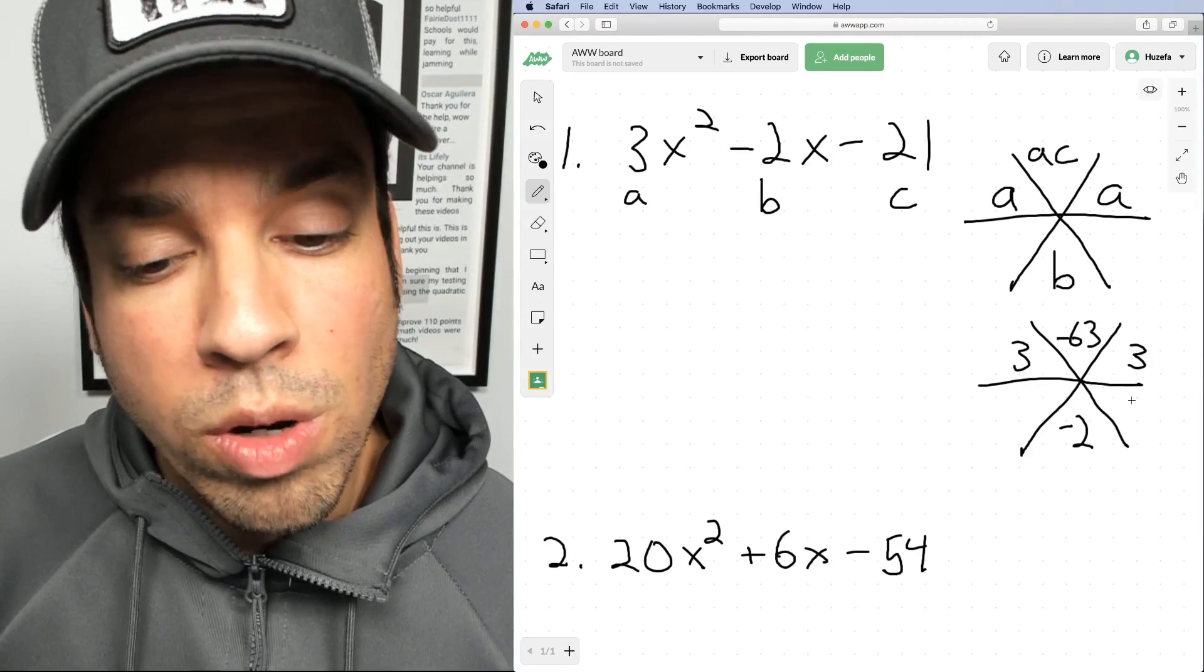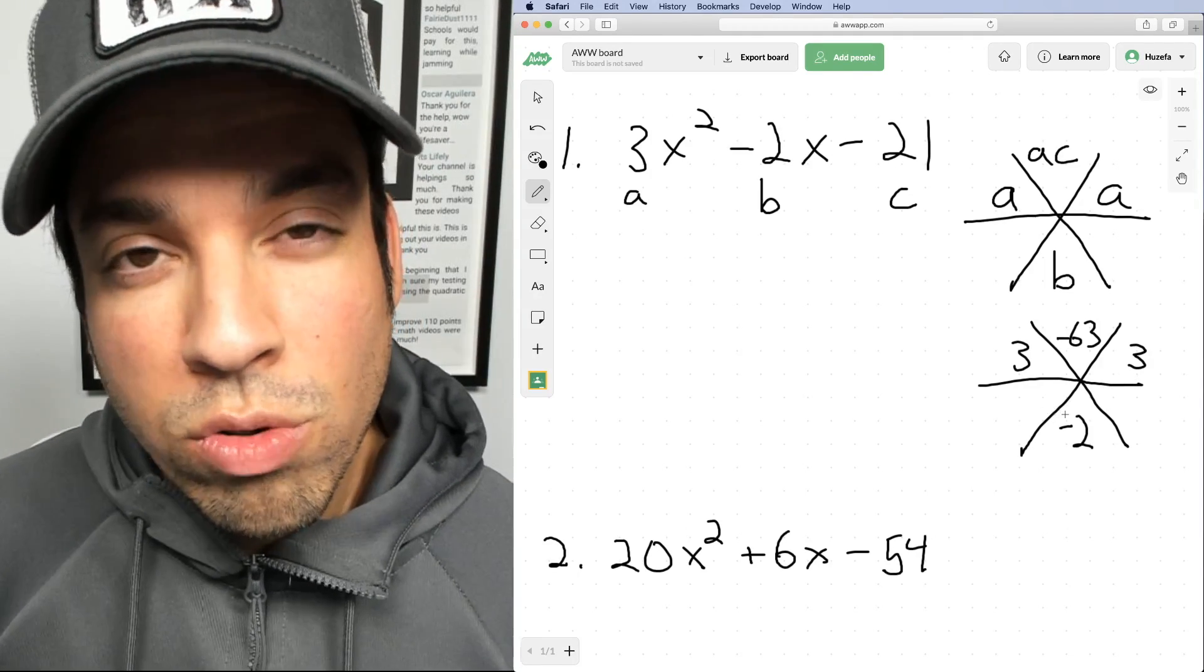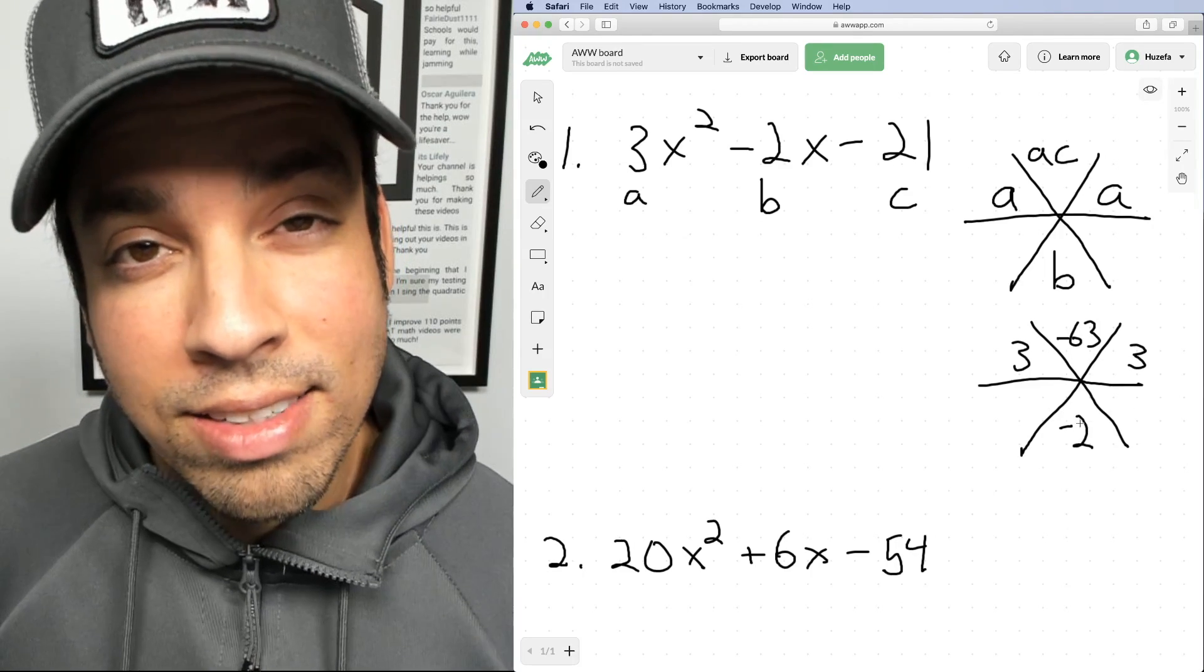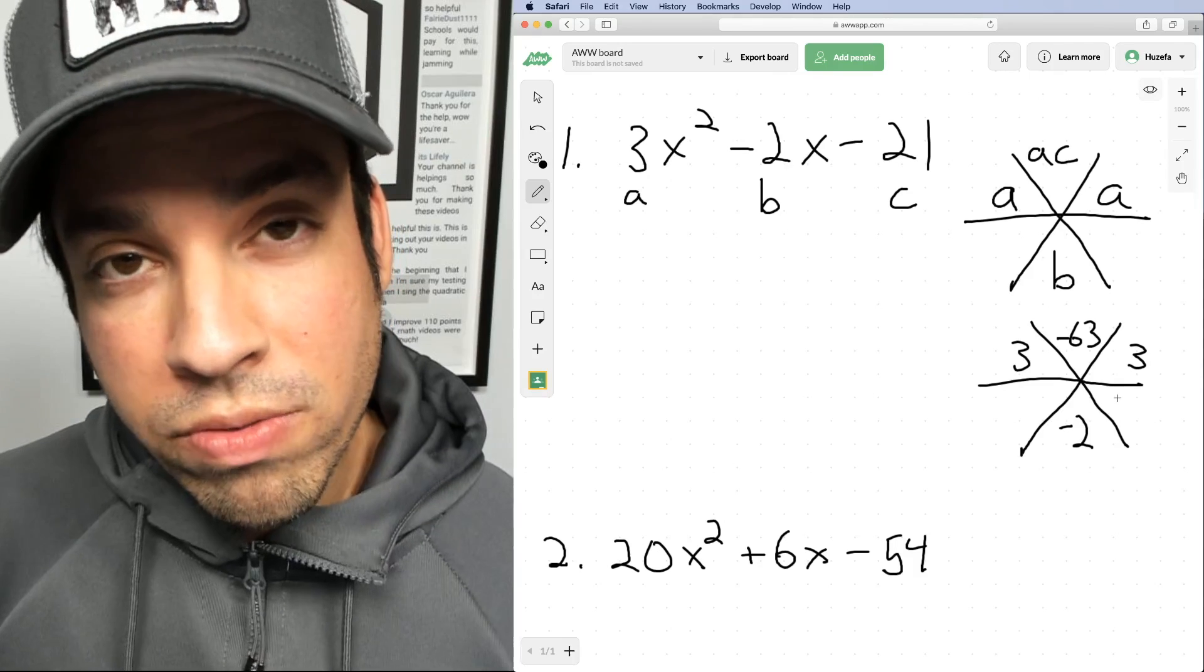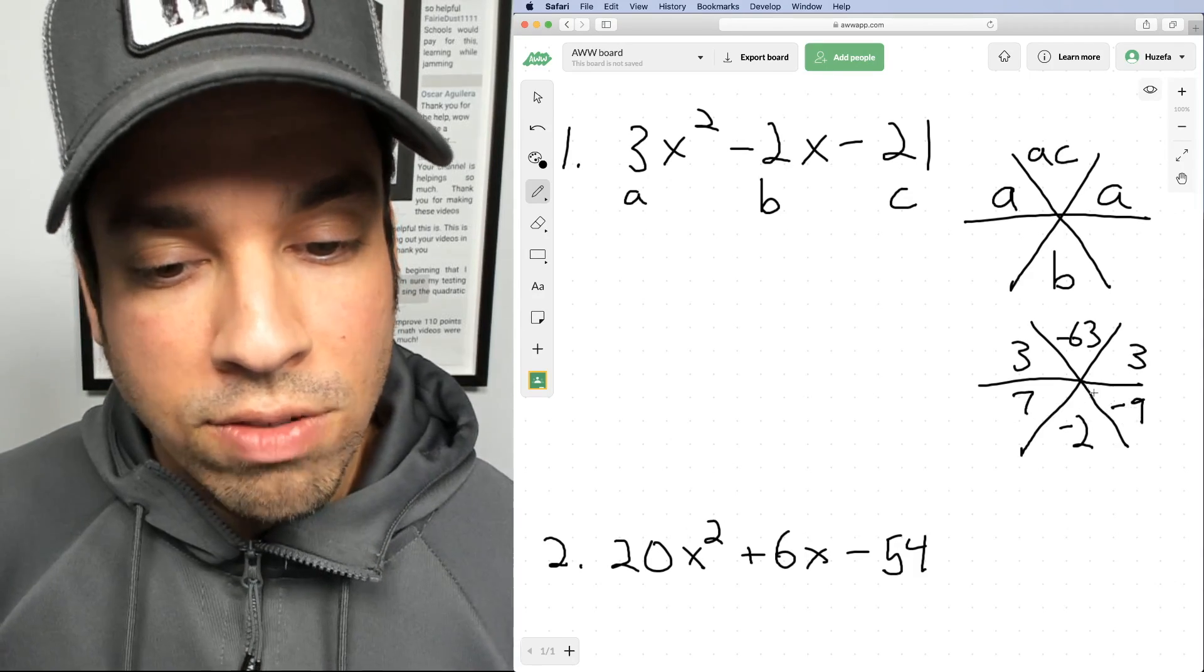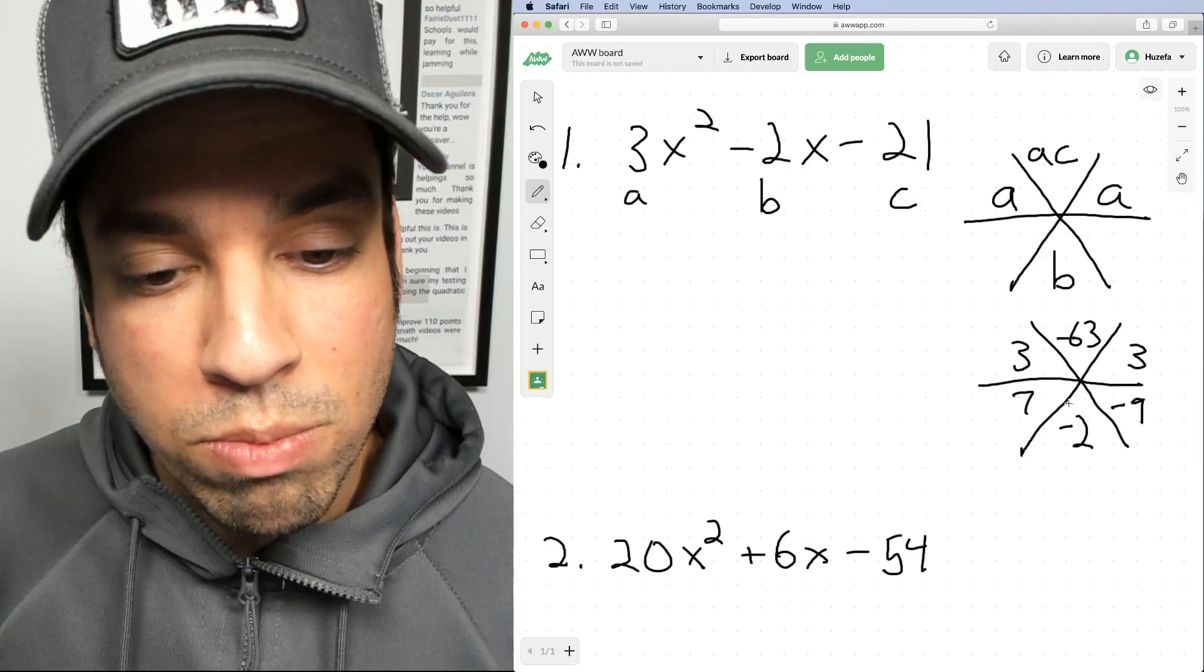Now the question is what goes in here and here? What goes here and here is whatever two numbers multiply to that negative 63 and then add to negative two. So what two numbers fit that bill? Well, it's negative nine and positive seven, right? They add to negative two, they multiply to negative 63. Boom, we got it.